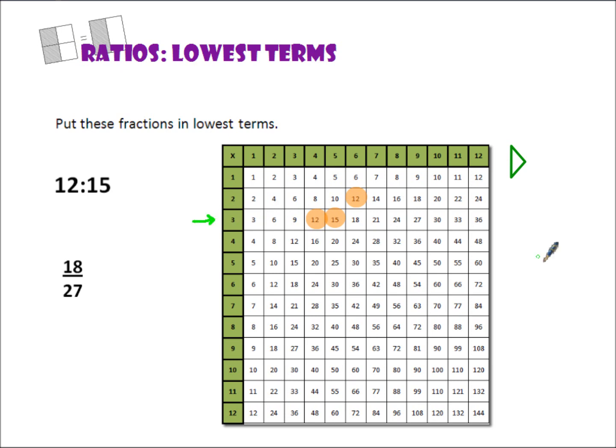So 3 is my greatest common factor. That means I'm going to divide my first term by 3, as well as my second term. At this point, I could use a calculator, or I could just continue using my multiplication chart to do my division. 3 will go into 12 four times.